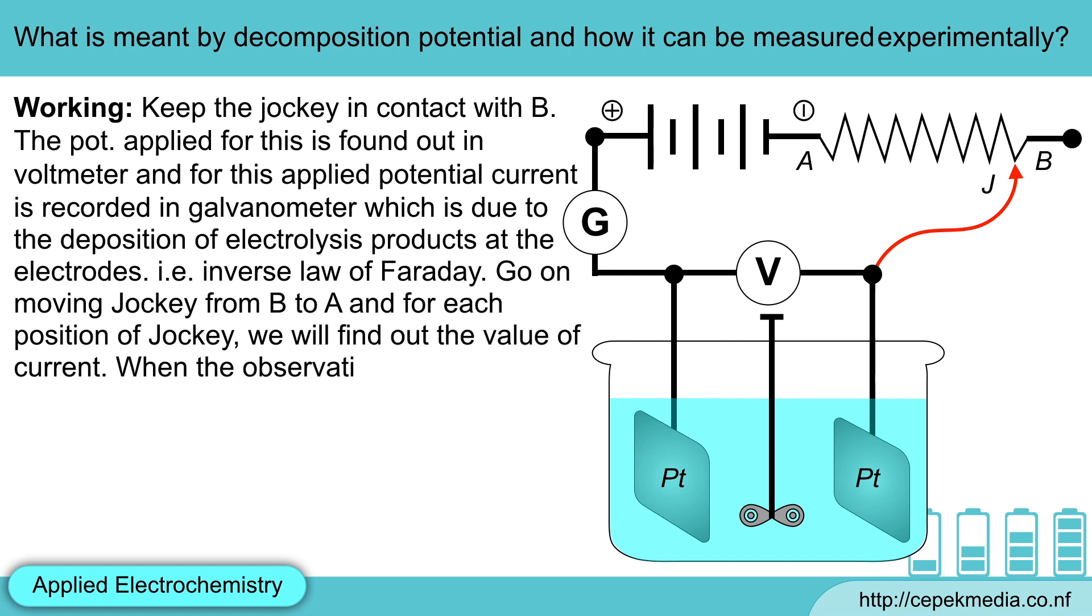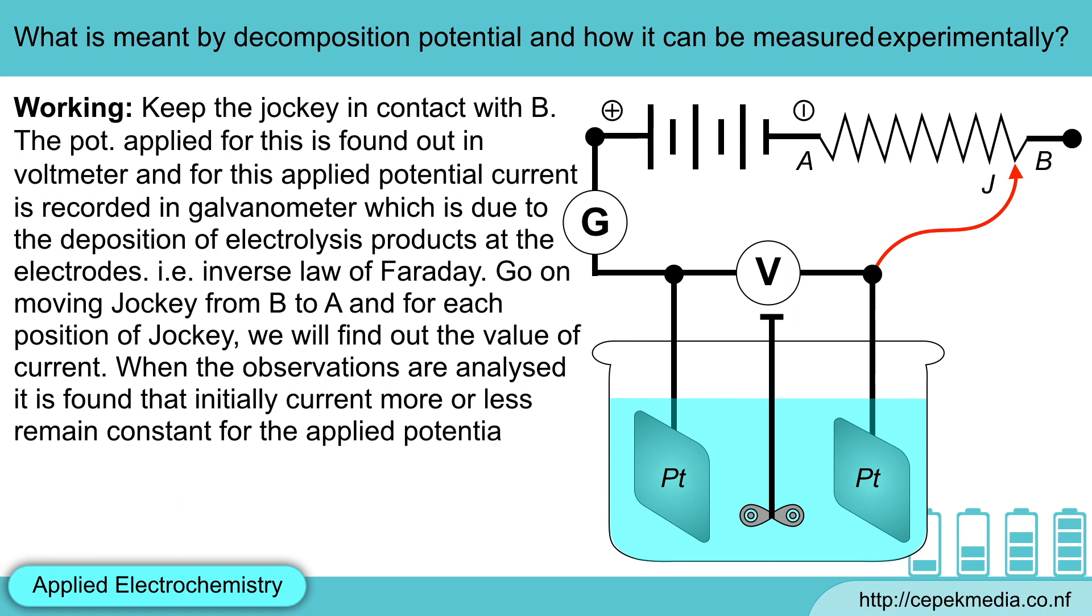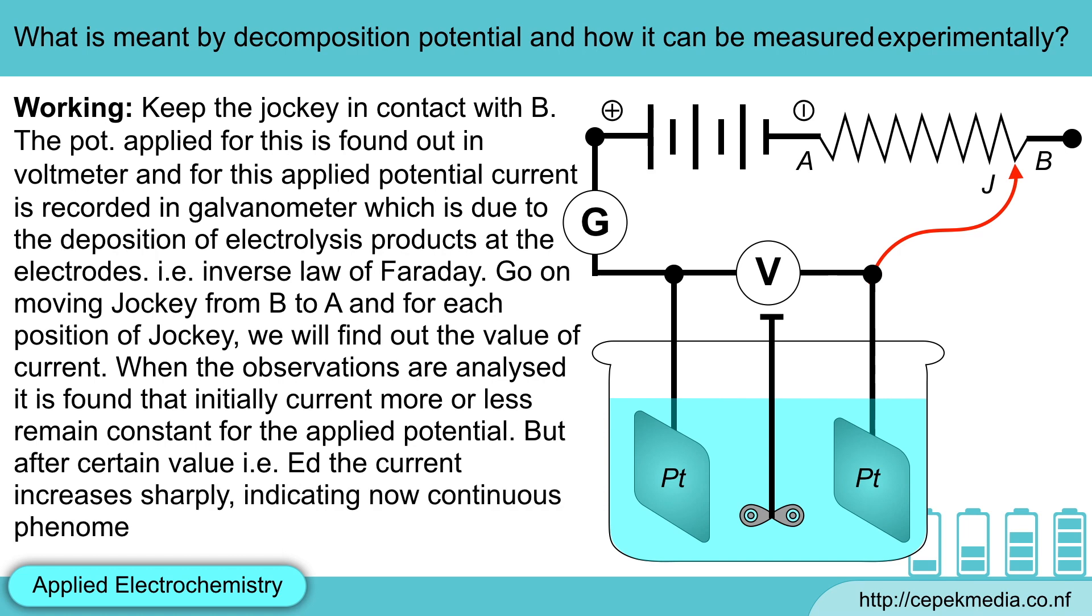When the observations are analyzed, it is found that initially, current more or less remains constant for the applied potential, but after certain value, i.e. decomposition potential, the current increases sharply, indicating now continuous phenomena of electrolysis takes place.